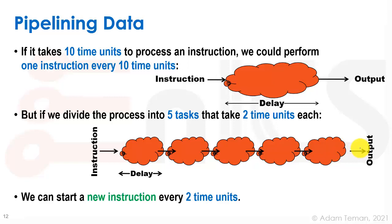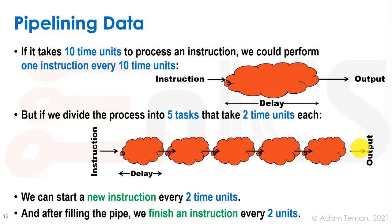But then we'll get another output every two time units. And that is a big speed up. In fact, in this case, it's a 5x speed up because we divided the task into five different parts. So after filling the pipe, we finish an instruction every two time units, and that's a really big speed up.